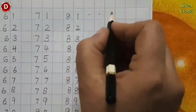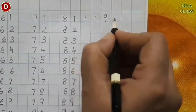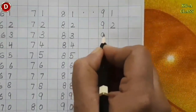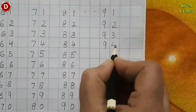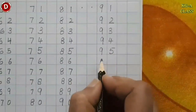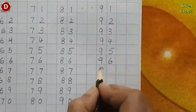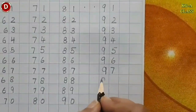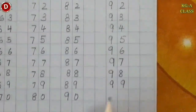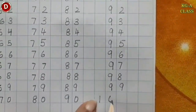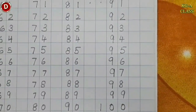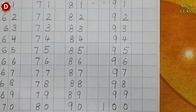Look here — two lines. Then you have to write 91, 92, 93, 94, 95, 96, 97, 98, 99 and then 100. One will come here and zero will come below 99. Okay, in this way you have to write 1 to 100.